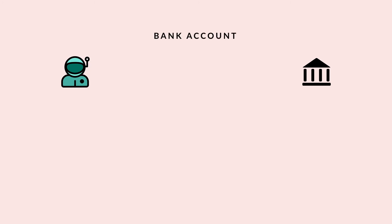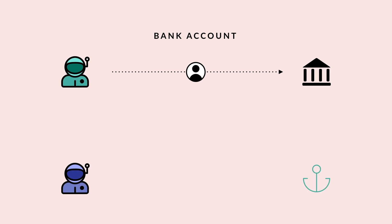When you want to hold assets with a bank in the real world, you must open an account with that bank. In the Stellar Network, when you want to hold assets with an anchor, you must issue a trust line from your Stellar account to that anchor's Stellar account. Trust lines also protect you from having random, unsolicited assets sent to you.